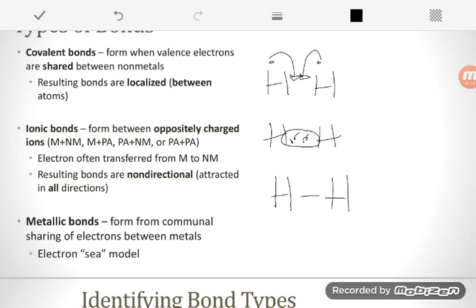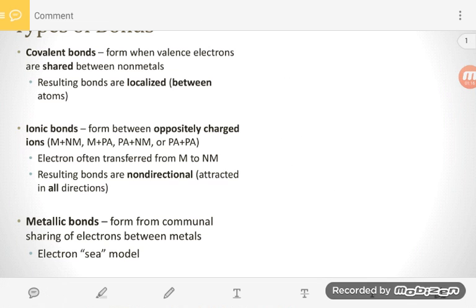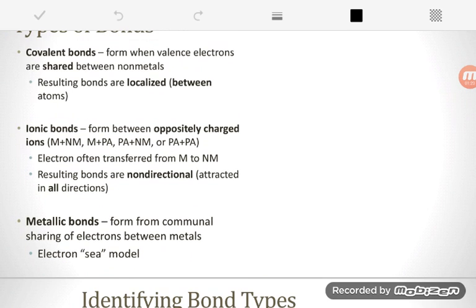Ionic bonds are very different. Ionic bonds form between two oppositely charged ions. Now sometimes you'll have two atoms come together, such as a metal and a nonmetal, that are originally neutral. But metals like to get rid of electrons and nonmetals like to take them.